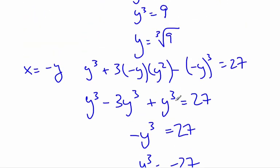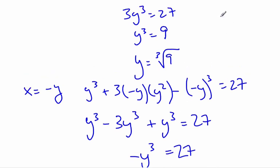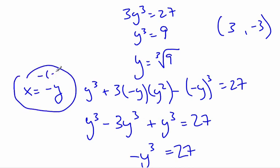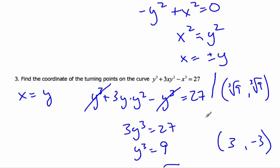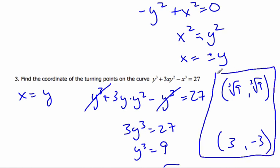When y equals negative 3, x equals positive 3, giving the coordinate (3, negative 3). So we have two turning point coordinates: (cube root of 9, cube root of 9) and (3, negative 3). To find these, we took the derivative, set it equal to 0, found the condition between x and y, substituted back, and solved for both coordinates.